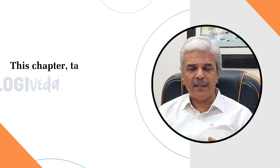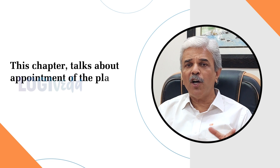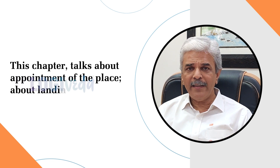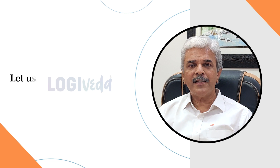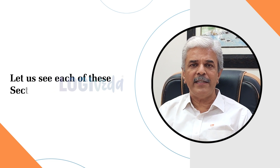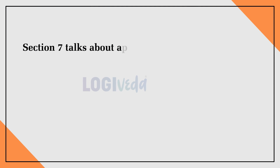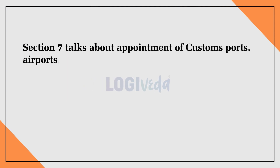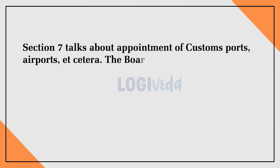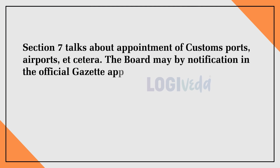When you look at this chapter, it talks about appointment of the place, it talks about landing, it talks about boarding. Let us see each of these sections in detail. Section 7 talks about appointment of custom ports, airports, etc. The board may by notification in the official gazette make appointments, so the proper officer in Section 7 is the board.